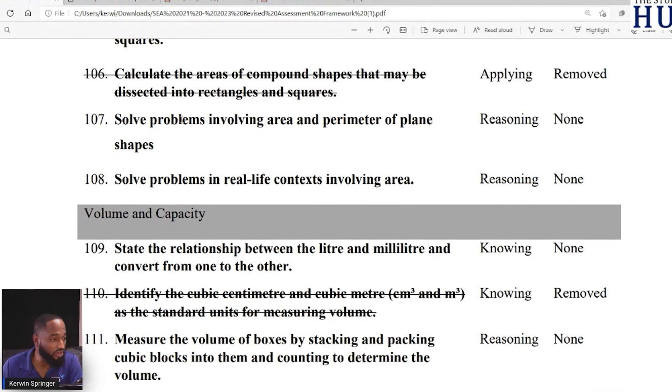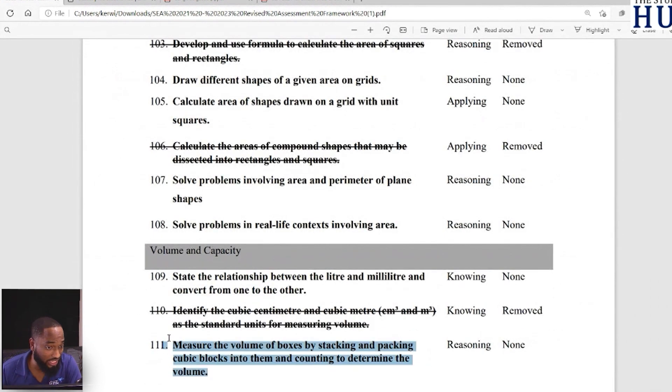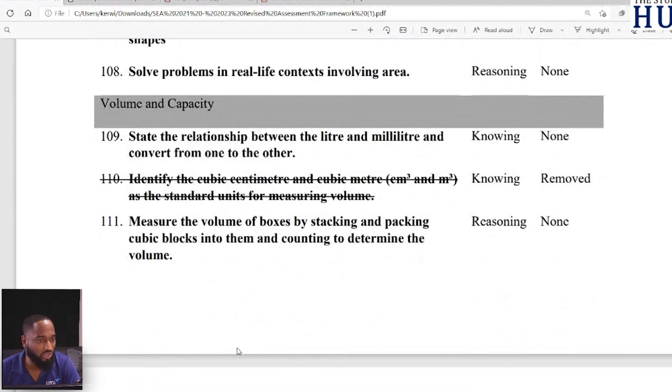Let's continue. Calculate the areas of compound shapes that may be dissected into rectangles and squares - also out. Parameters with compound shapes - out. Area with compound shapes - also completely removed. Just today I was speaking to students about this: identify the cubic centimeter and cubic meter, cm³ and m³. Most teachers are already keeping abreast with this because a lot of students didn't know about cm³ or m³ in classes. So centimeter cube and meter cube as the standard units for measuring volume - that's out.